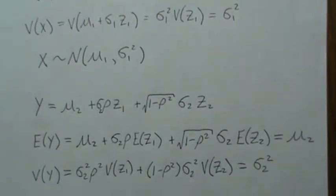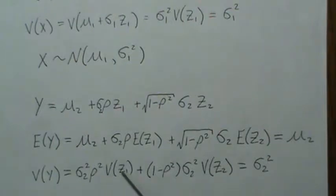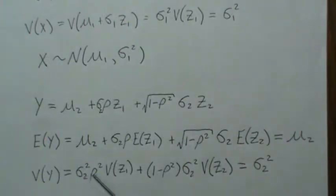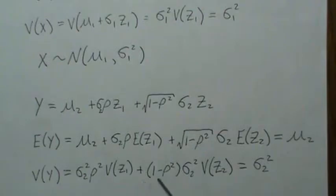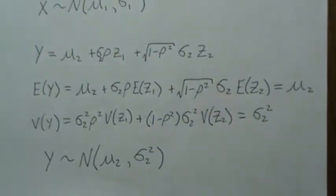Now let's look at the variance of y. The variance of a constant is zero. When you take the variance of the remaining terms, the constants come out squared. The variance of a standard normal is 1, so you get sigma2 squared times rho squared plus sigma2 squared times (1 minus rho squared). The minus rho squared and plus rho squared terms cancel out, leaving just sigma2 squared. So y is normal(mu2, sigma2 squared).